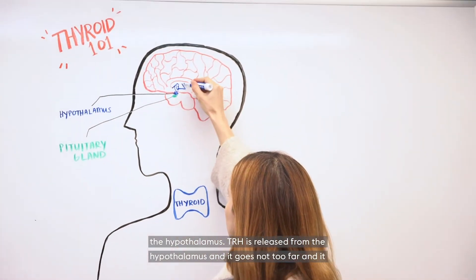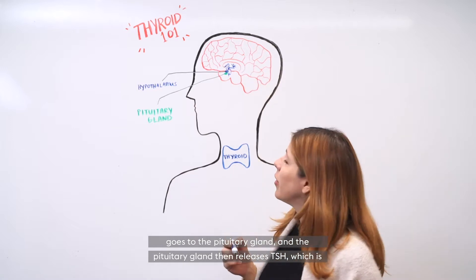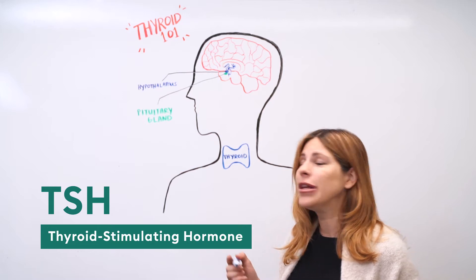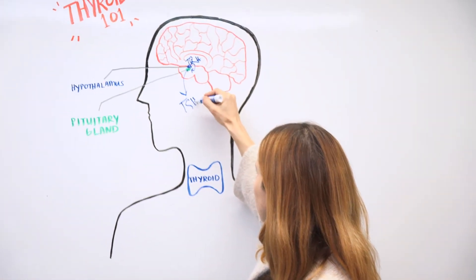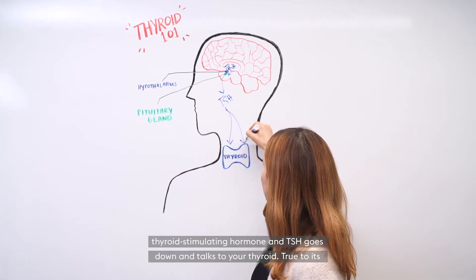TRH is released from the hypothalamus and it goes to the pituitary gland, and the pituitary gland then releases TSH, which is thyroid stimulating hormone. And TSH goes down and talks to your thyroid.